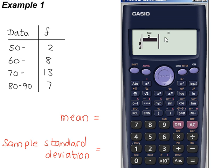Turn on frequencies. Shift, setup, scroll down. Statistics is option 3, and 1 to turn on frequencies.